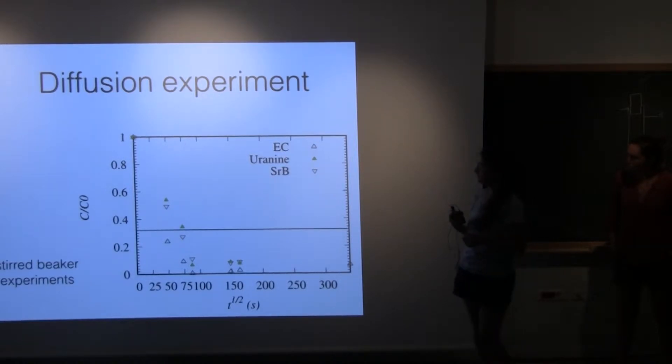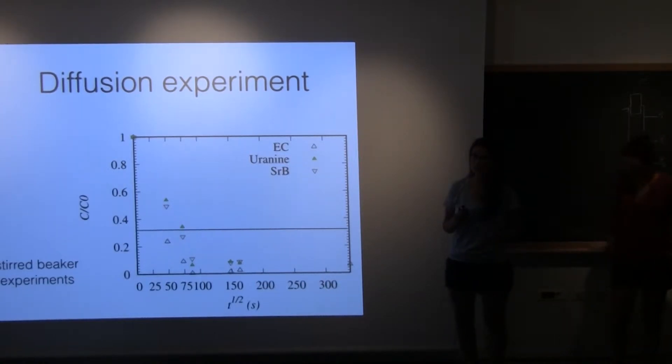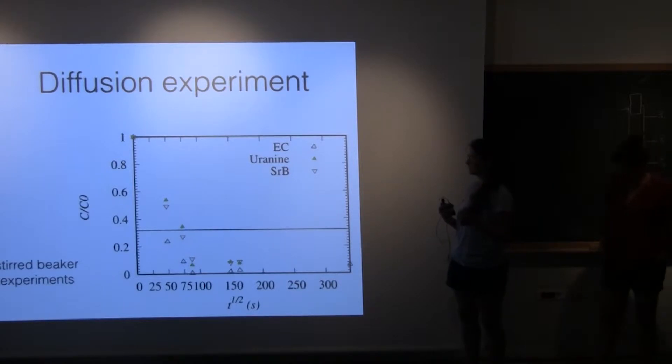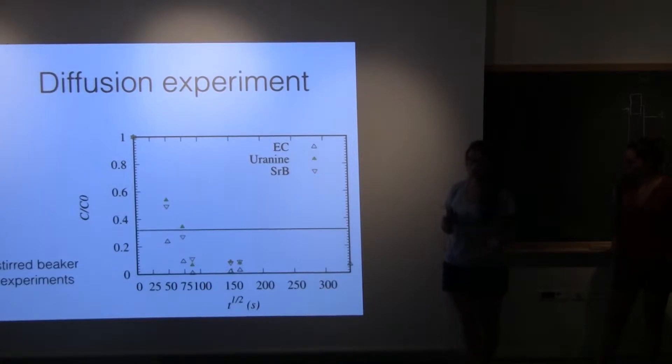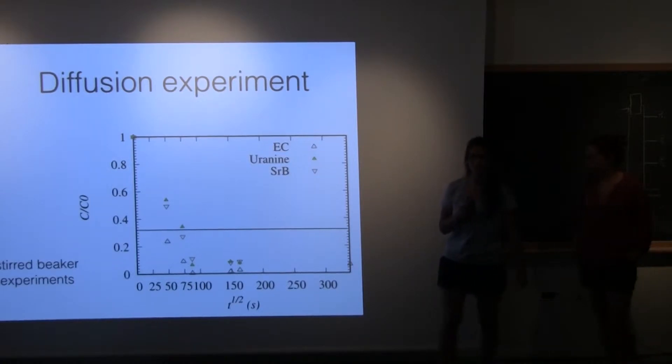We did that for all our tracer substances that we were going to use later. For the salt we used electrical conductivity, and for the uranine and the rhodamine B we would have a fluorometer which would measure the concentration for us. On this graph the x-axis has time in seconds and the y-axis has concentration relative to the initial concentration. For all the tracers you can see we have a decay in concentration from which we could theoretically calculate the diffusion coefficient.